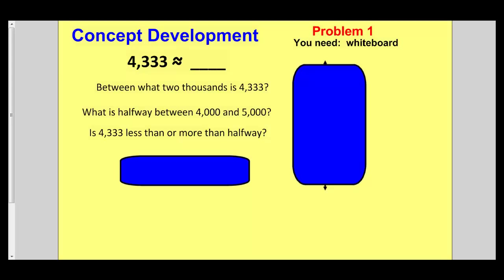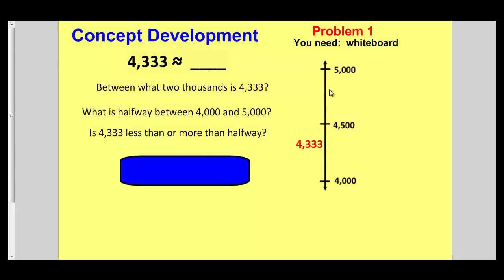Write 4,333 and the estimating symbol in your math journal. Draw a vertical number line and label it with the thousands that 4,333 is between. Label the halfway point between 4,000 and 5,000. Then place 4,333 — you can see it is less than halfway — so 4,333 rounds to 4,000.